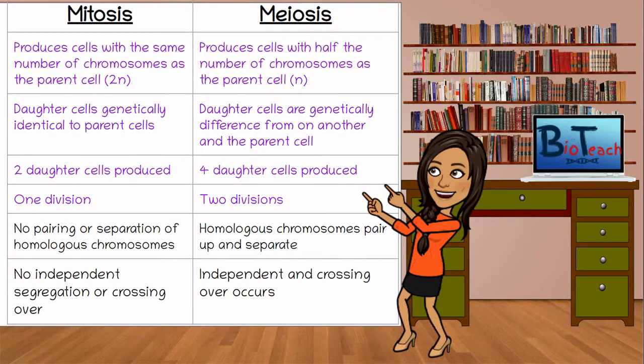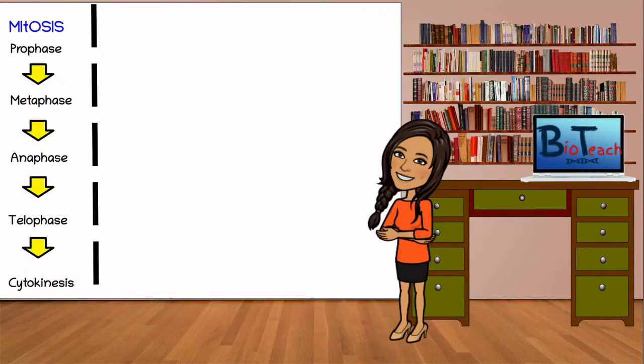The next point to look at is the number of divisions. In mitosis, we have prophase, metaphase, anaphase, telophase, and cytokinesis.